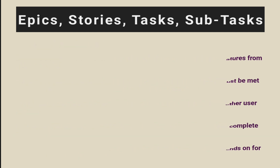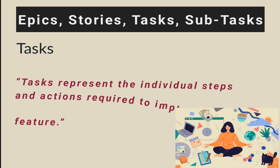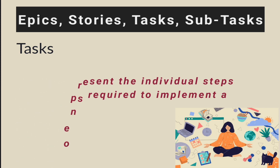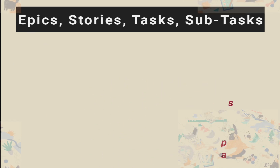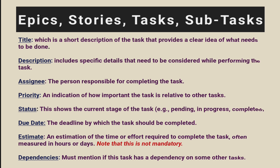With that, let's move to tasks. Most of the time, we need to break down user stories into detailed units to complete the functionality. Tasks basically represent the individual steps and actions required to implement a particular feature. Features are represented mostly by user stories. We will now see what necessary information we should cover in tasks.